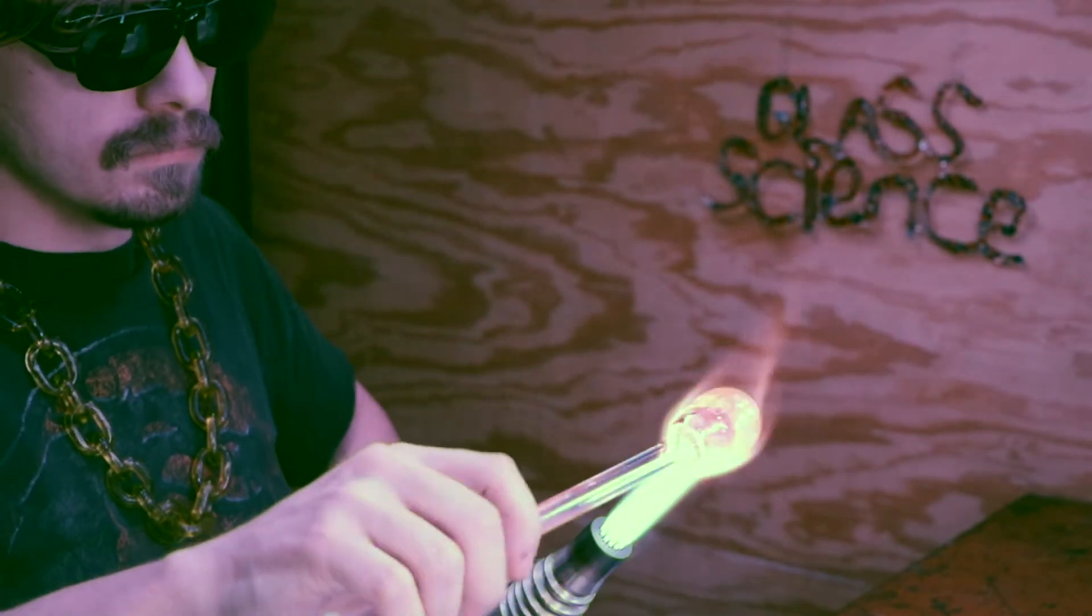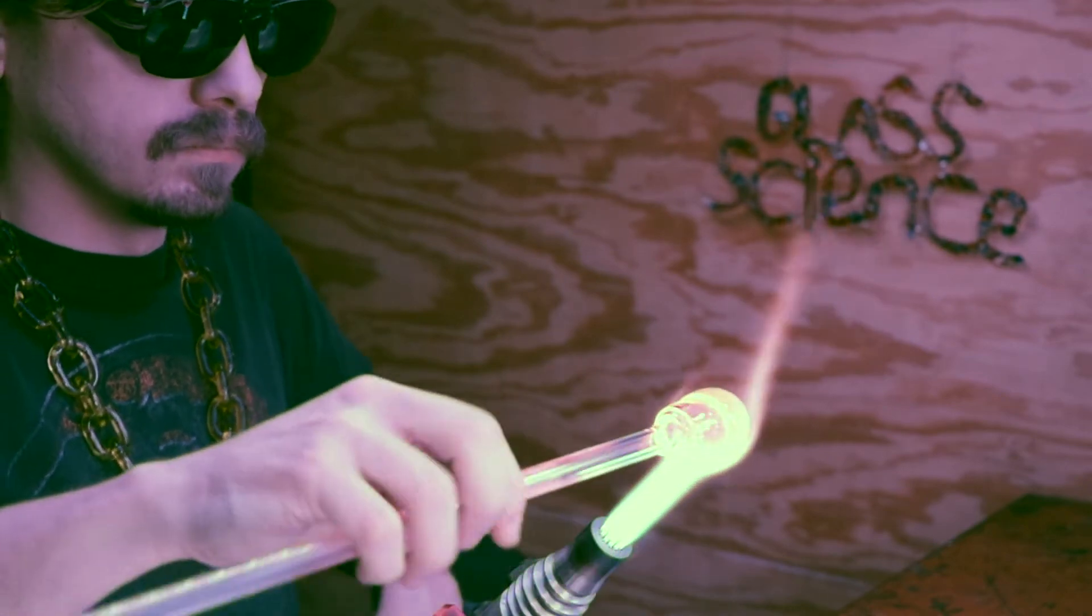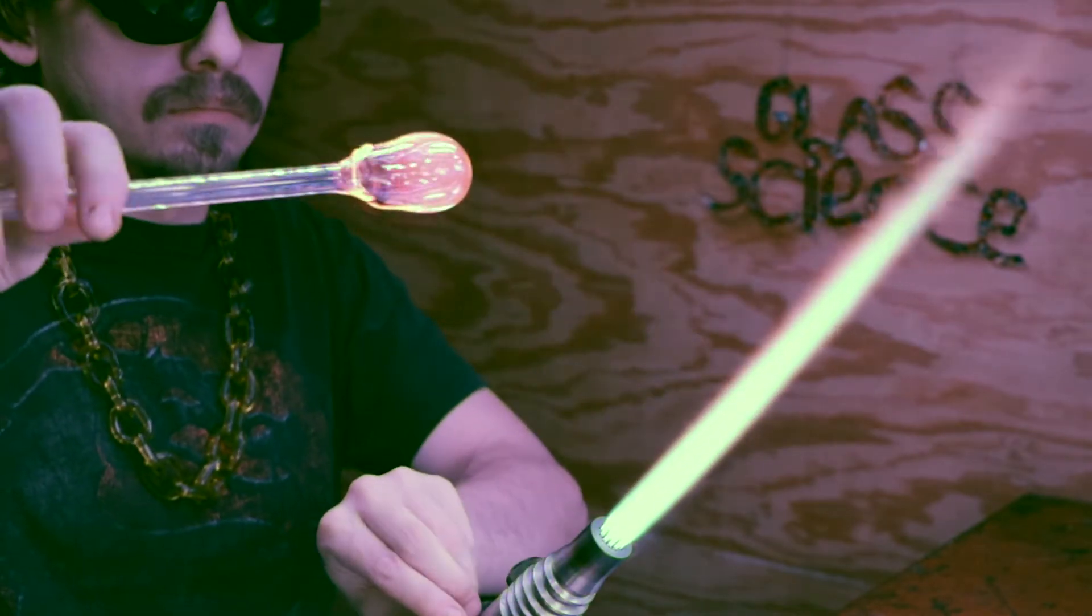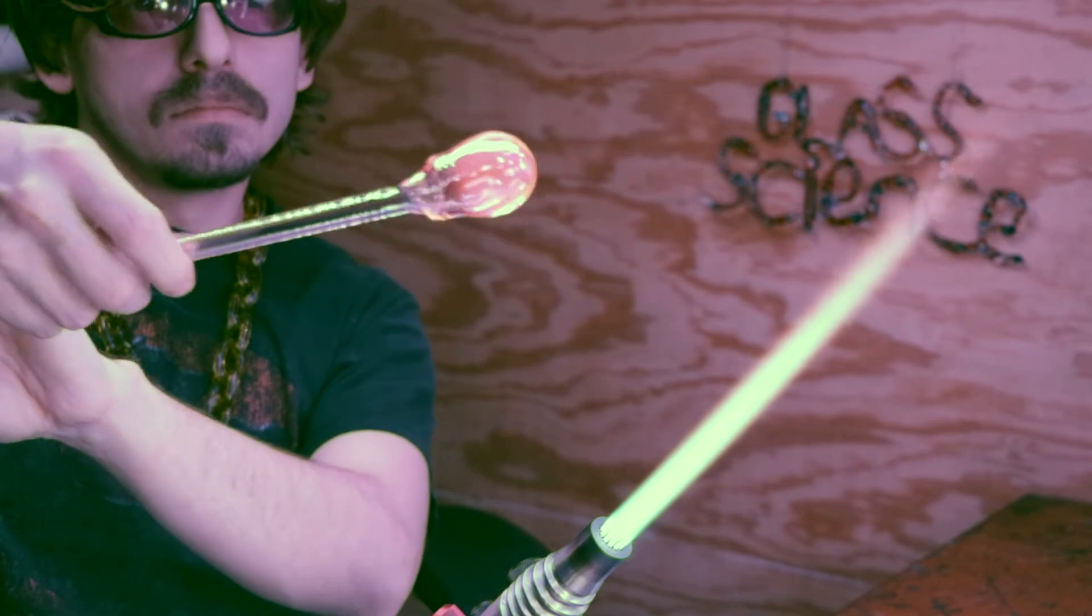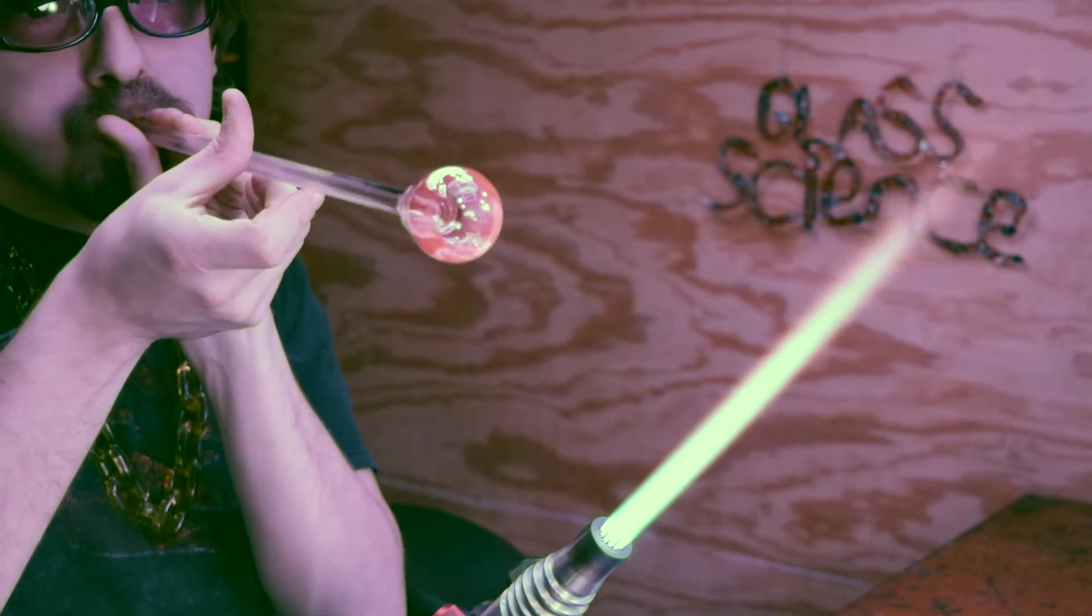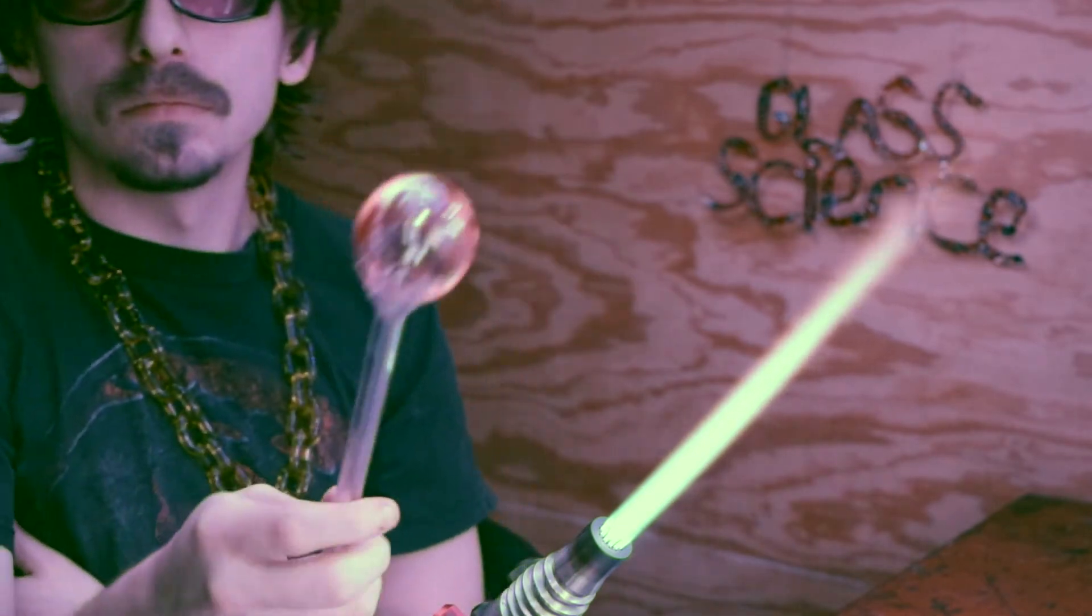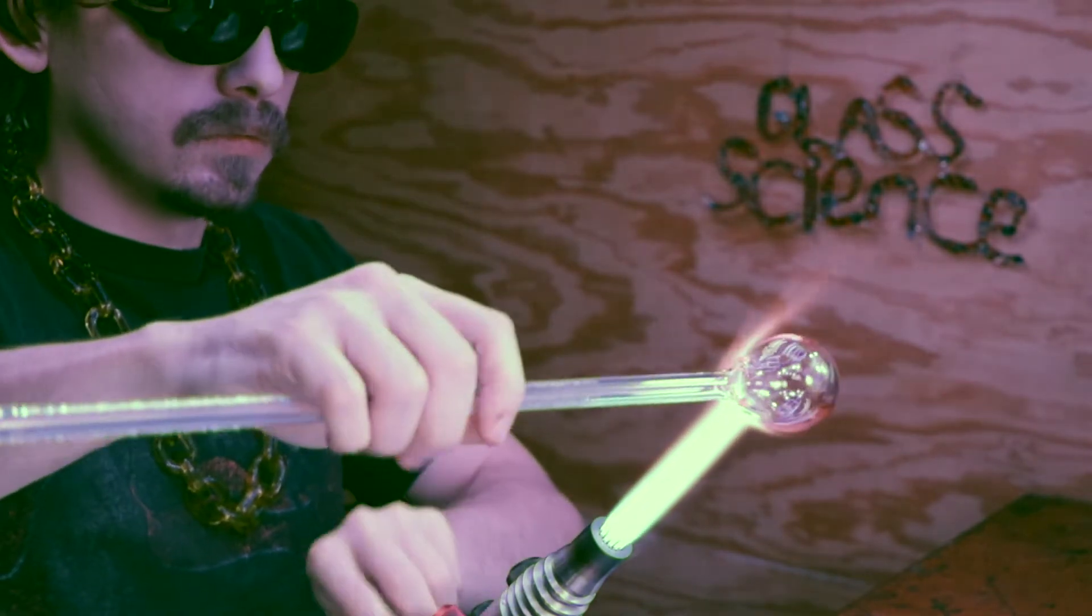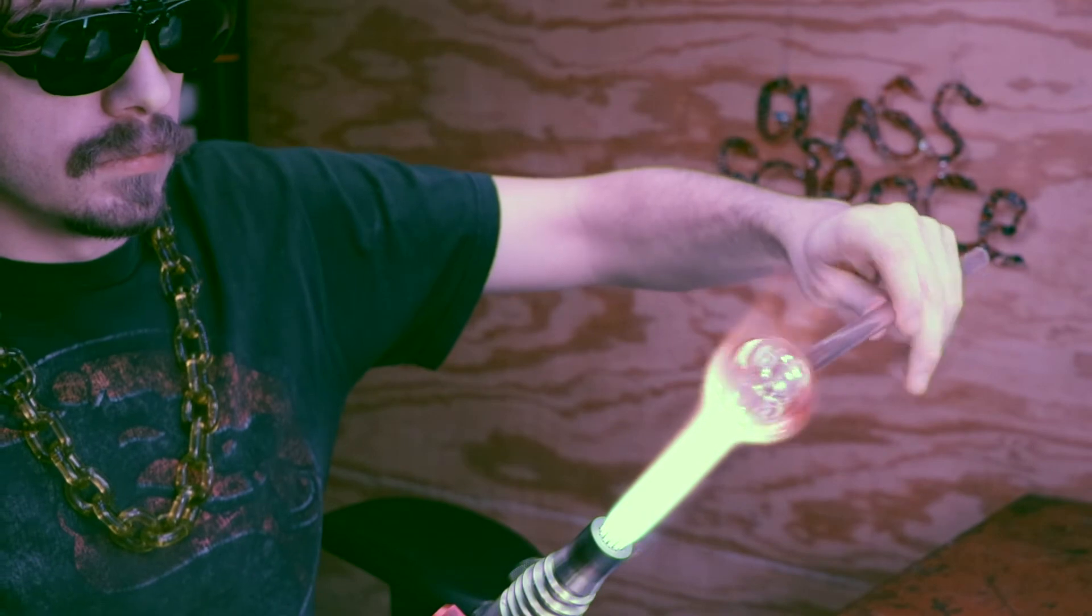One thing that helps keep the heat even is to wait a few seconds before blowing into the piece, so the heat actually has time to radiate evenly throughout. As you can see here, I'm just holding it, and then eventually I go in there and start to puff it out. If I were to expand it too quickly, I could actually blow it out so thin that it would pop like a balloon.